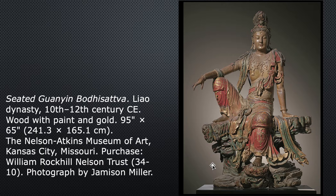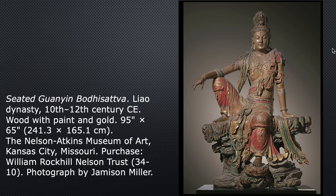This bodhisattva looks very prince-like. If you didn't know he was a religious figure, you'd just assume he was a royal. He's wearing very elaborate, expensive clothes and has a crown on his head. The crown seems to be hiding his topknot, but this figure has the long earlobes and the dot between his eyes — other attributes that tell us who he is. I think he's gorgeous; look at the beautiful painting on his body as well. This is no simple monk.